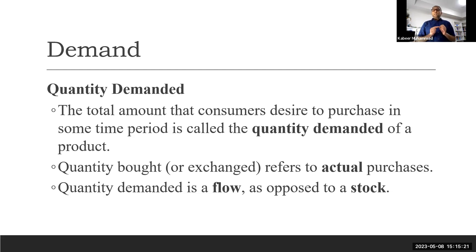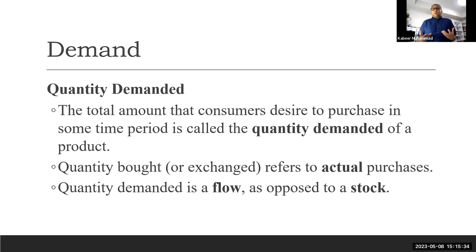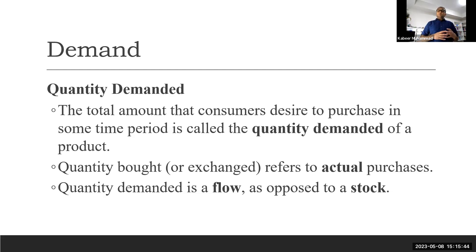A desire or need only becomes demand if it is backed by the ability to buy — meaning they have the resources — and they have a plan to buy. For example, I might wish to buy an aeroplane, but I can't because I don't have the resources. Sometimes we have resources and want to buy, but say we'll buy later. So all three elements must be present to make a demand.